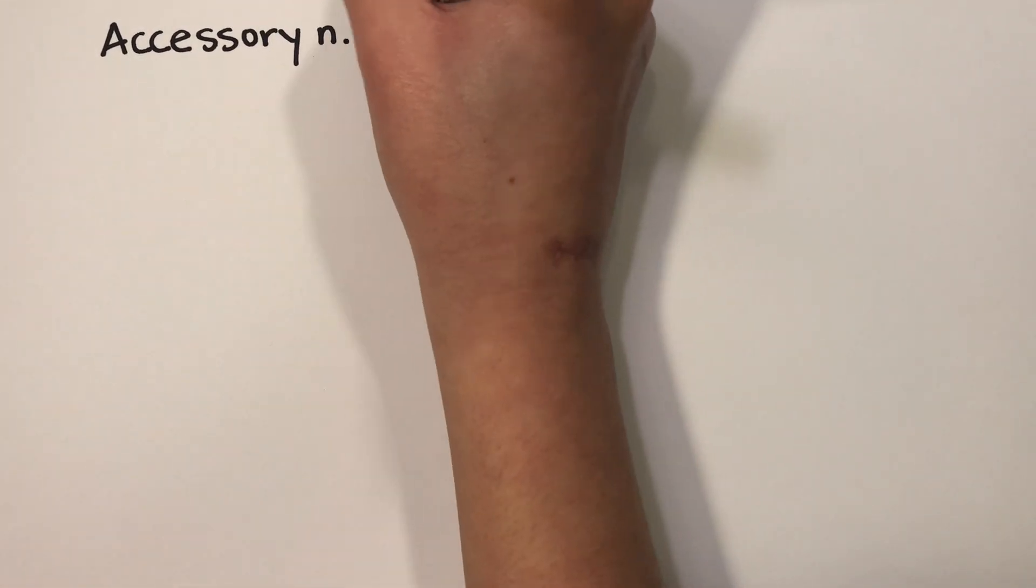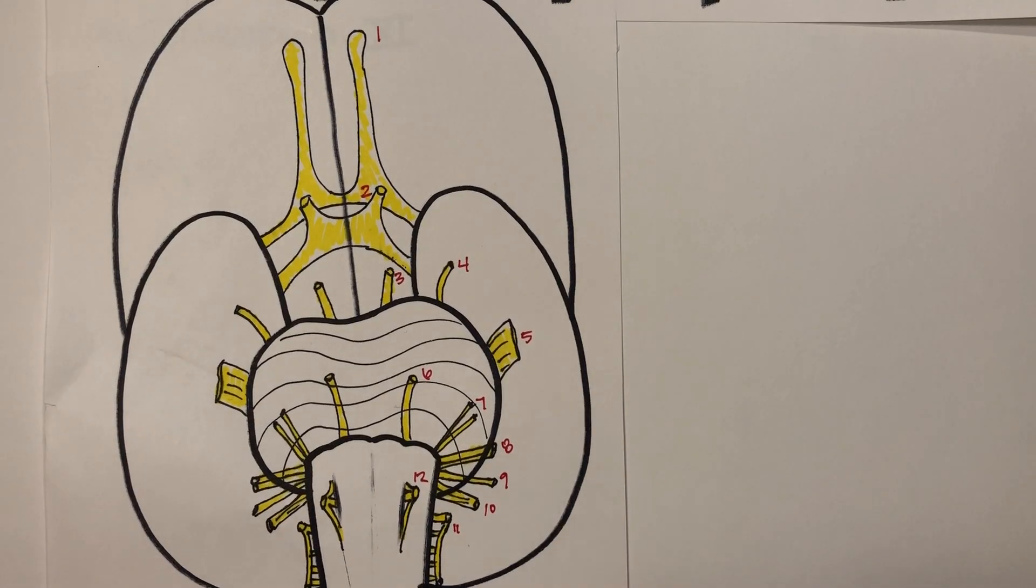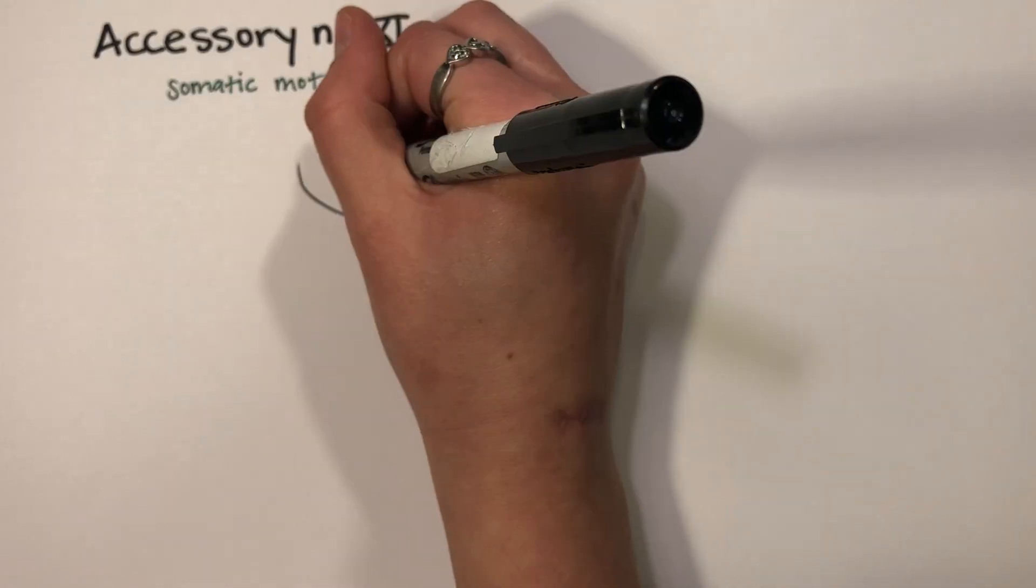Accessory nerve 11 is the 11th of the cranial nerves. Here is its location on the brain. It is made up of somatic motor fibers which innervate two muscle bodies.